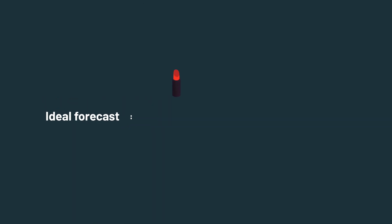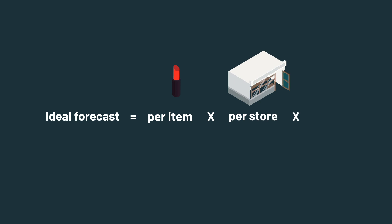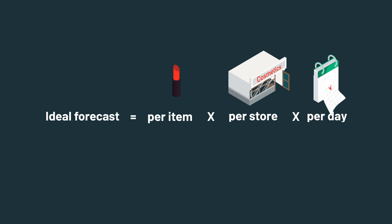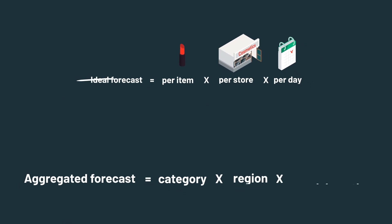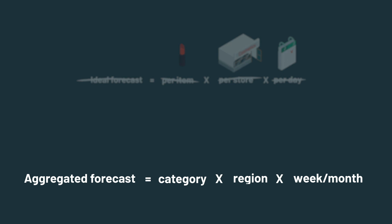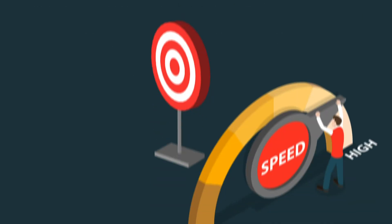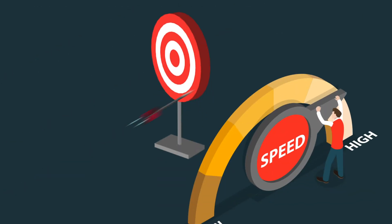So where ideally you would run these forecasts per item, per store, per day, provisioning the resources to generate these many forecasts was cost prohibitive. Instead, you would aggregate to the item category level per region, per week, or even month. While this approach delivers forecasts in a timely manner, it comes at the cost of accuracy.